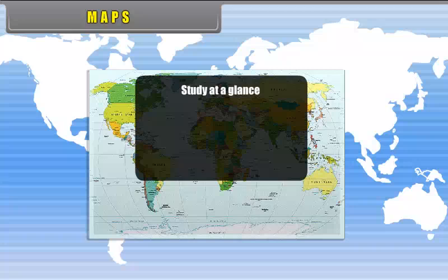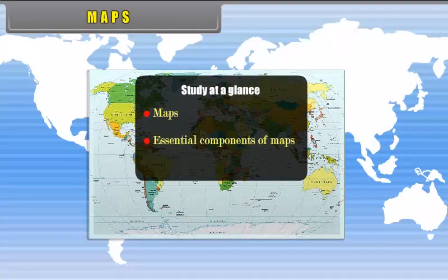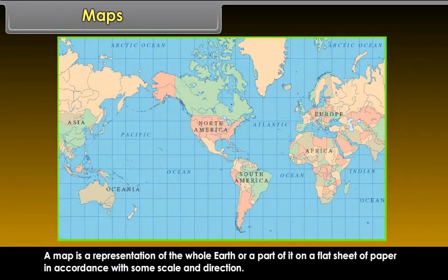A map is a representation of the whole earth or a part of it on a flat sheet of paper in accordance with some scale and direction.